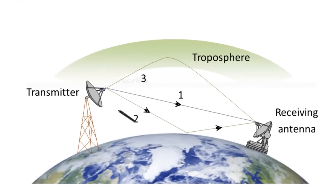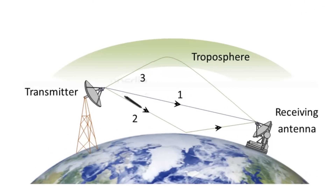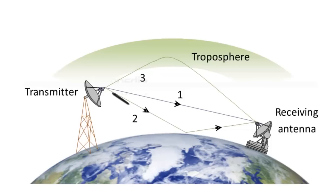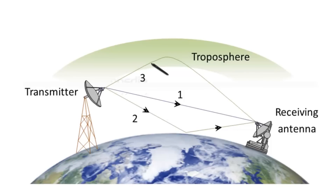Space waves are the radio waves of very high frequency: 30 MHz to 300 MHz (VHF), ultra high frequency 300 MHz to 3000 MHz, and microwaves more than 3000 MHz. At such high frequencies, sky wave as well as ground wave propagation both fail. So these waves can be transmitted from transmitting antenna to the receiving antenna either directly or after reflection from the ground or the troposphere.